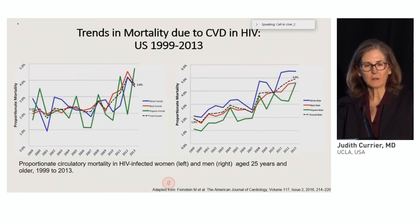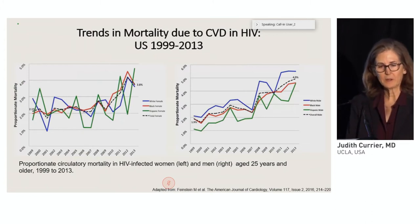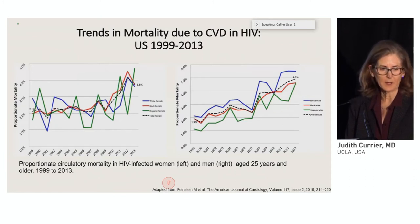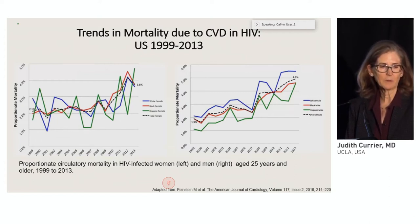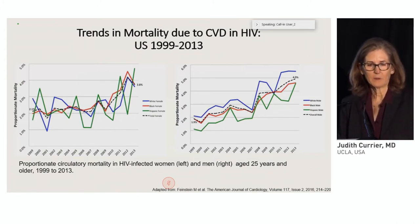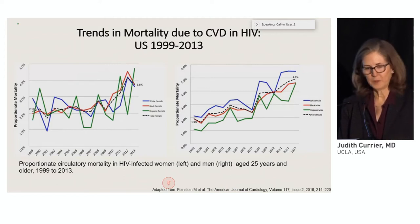In terms of cardiovascular disease, trends in mortality due to this over the last period of time — the rates are continuing to go up. This slide is divided with women with HIV on the left and men on the right, showing proportionate mortality over time. You can see that for black women, white women, and Hispanic women in blue, red, and green, these rates are on the rise, and the increase seems to be a little bit more accelerated among the women.